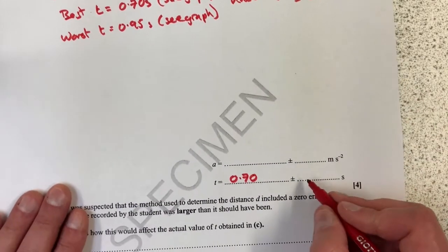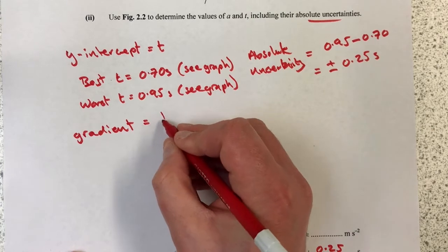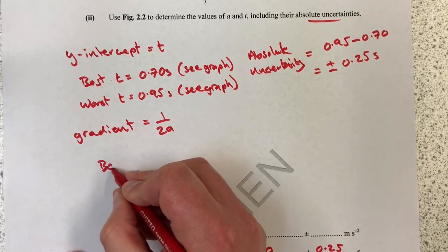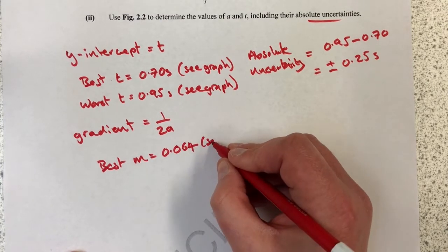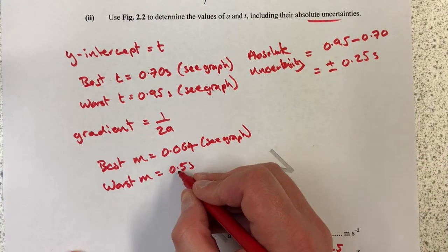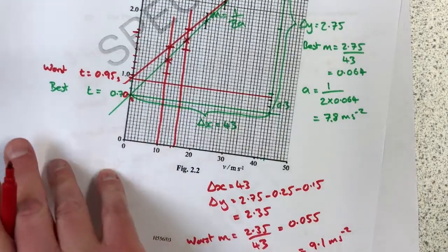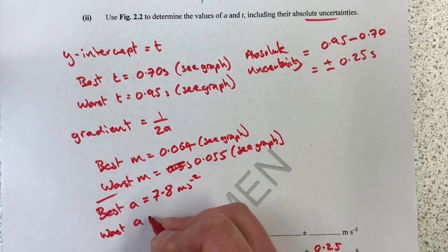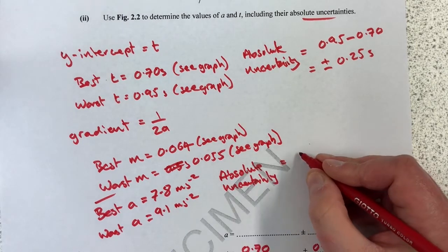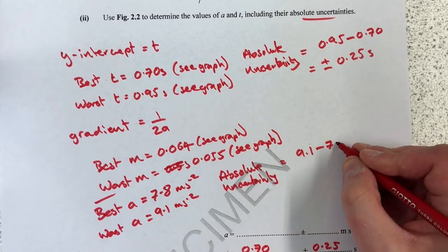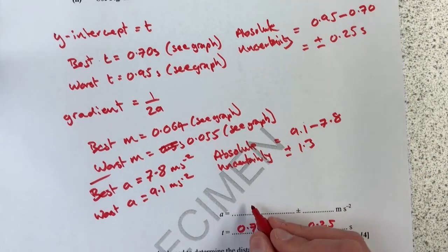Same again for the gradient. The gradient equals 1 over 2a. My best value for the gradient is 0.064 'c graph', and my worst 0.055 'c graph'. Therefore my best value for a was 7.8 and my worst value for a was 9.1, and therefore these two values will have an absolute uncertainty of 9.1 minus 7.8, 1.3 is my uncertainty. So my best value down here for my answer will be 7.8 plus or minus 1.3.